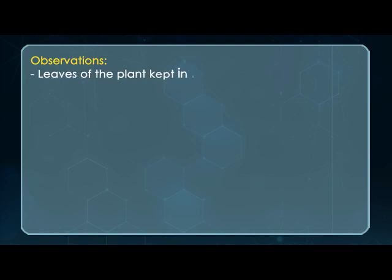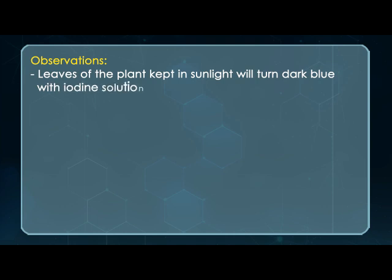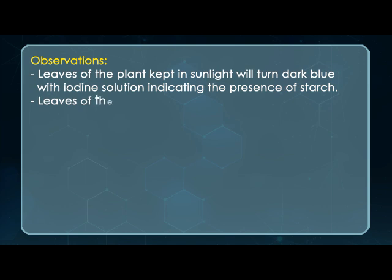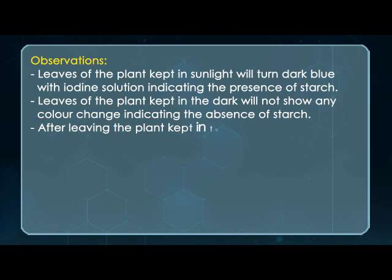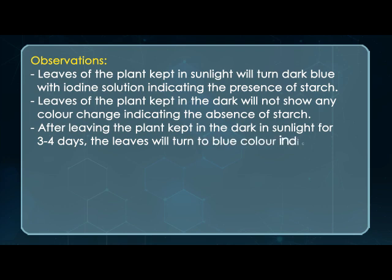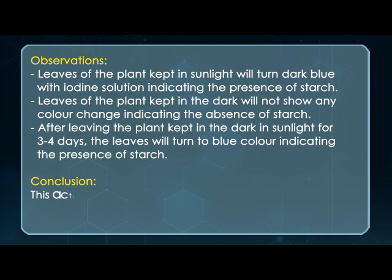Observation: Leaves of the plant kept in sunlight will turn dark blue with iodine solution, indicating the presence of starch. Leaves of the plant kept in the dark will not show any color change, indicating the absence of starch. After leaving the plant kept in the dark in sunlight for three to four days, the leaves will turn blue, indicating the presence of starch.